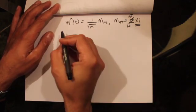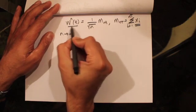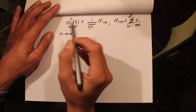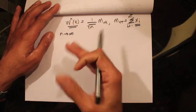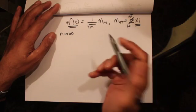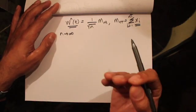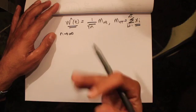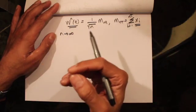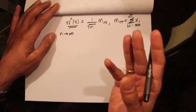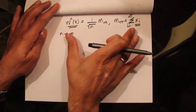As n goes to infinity, the scale symmetric random walk basically gives us a Brownian motion. You could think of it as tossing coins infinitely fast — as n goes to infinity we are tossing coins faster and faster.